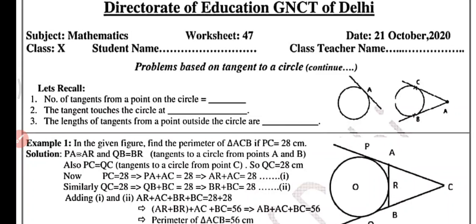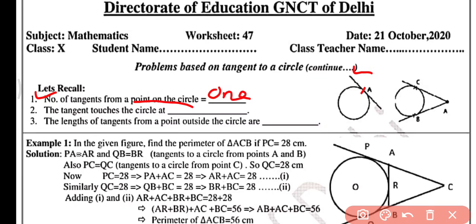Let's recall first. The number of tangents from a point on the circle is one. When point A is on the circle, only one tangent can be drawn. The tangent touches the circle at one point — you can see here point A is common to both the circle and the tangent.